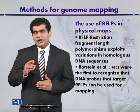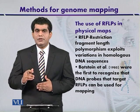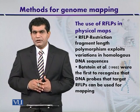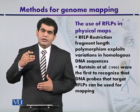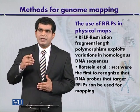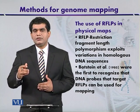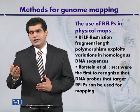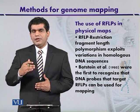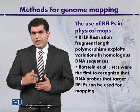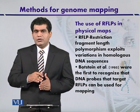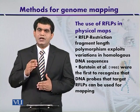This 0.1% difference affects restriction target sites from one individual to another. Due to this variation, restriction sites for enzymes will be different, so when we digest the DNA we will get different patterns on gel electrophoresis. Different types of bands will be separated on the basis of their length, because the enzyme will target at different locations.